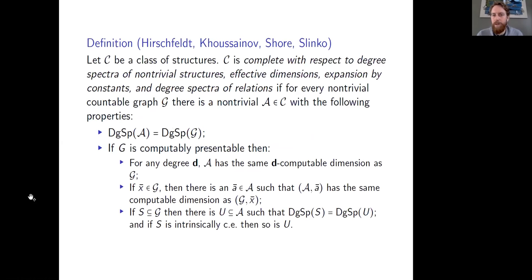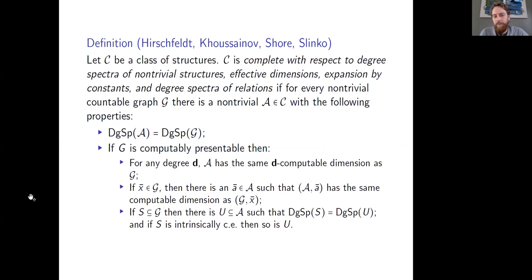A better approach would be some general construction that transfers all these properties at once — some way of taking a graph and turning it into a lattice that transfers all the graph's properties to the lattice. There's a paper of Hirschfeld, Kussain, Shor, and Slinko that did this. They picked a bunch of properties of computable structures — degree spectra, computable dimension, and a few others — and said the class C is complete with respect to this list if any time you have a countable graph G, you can find a structure in your class that has all the same properties: same degree spectrum, same computable dimension, etc.